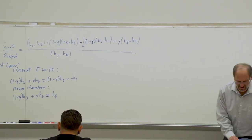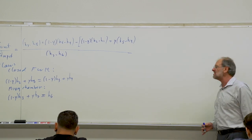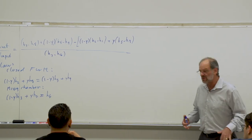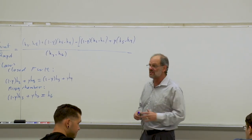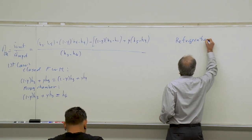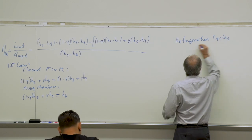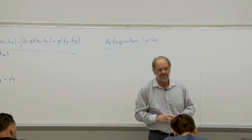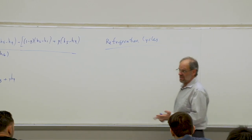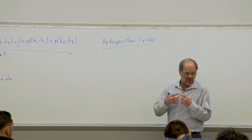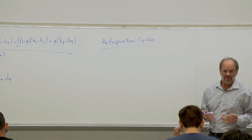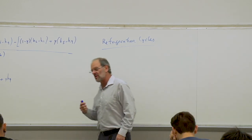Now I'm finished with the discussion of the Rankine cycle and its variations. We're moving on to Chapter 11, which deals with refrigeration cycles — the last of the thermodynamic cycles we'll cover. We're done with heat engine cycles: auto cycle, diesel cycle, Brayton cycle, Rankine cycle. In all of those, we try to maximize net work output and minimize heat input. In a refrigeration cycle, everything is reversed.